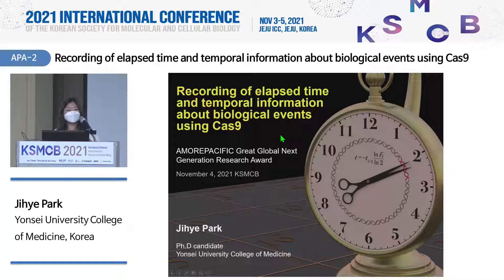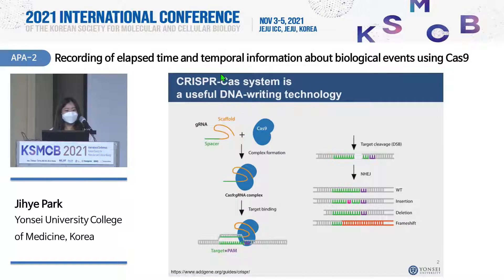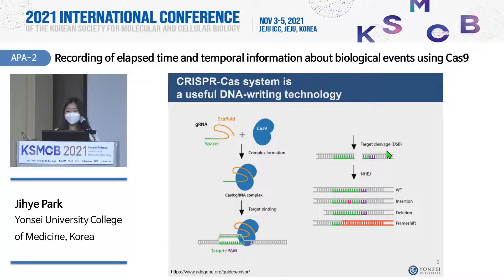In our lab we are working on the CRISPR-Cas system, and especially for me I'm researching applications of the CRISPR-Cas system. The CRISPR-Cas system is now well known and is a useful DNA writing technology. For this to work we need two components: guide RNA and Cas9 protein, which is a nuclease. Together they can target our sequences and induce a double-strand break, allowing us to make insertions or deletions in our target sequences.